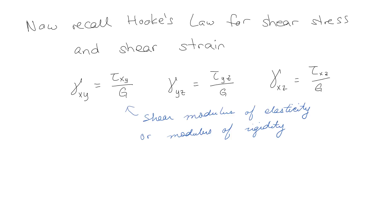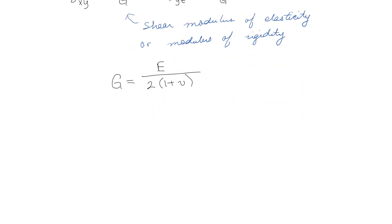Now we're going to look at Hooke's Law for shear stress and shear strain. These are basically the same equation written for three different axes. Remember that G on the bottom is the shear modulus of elasticity — other people call it the modulus of rigidity. And we also learned that G equals E divided by 2 times (1 plus nu), which is going to turn out to be useful.